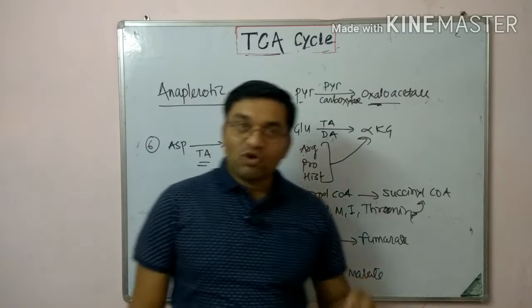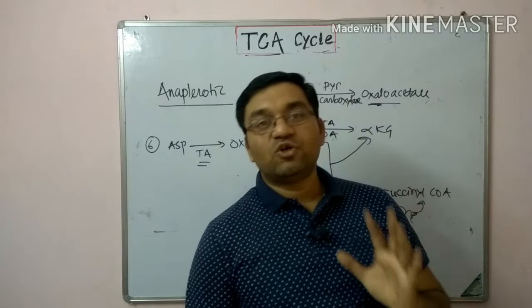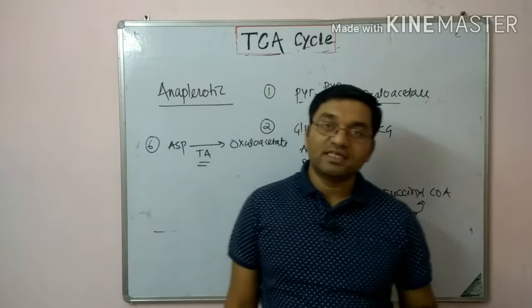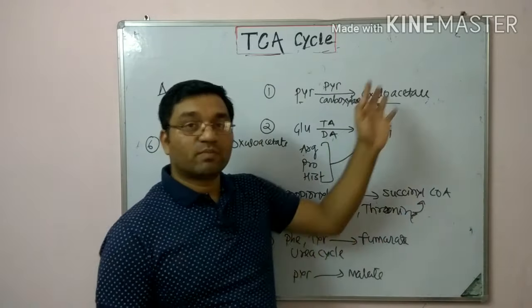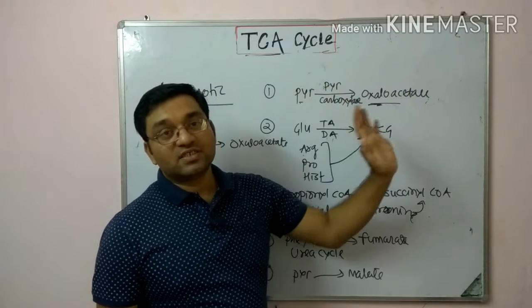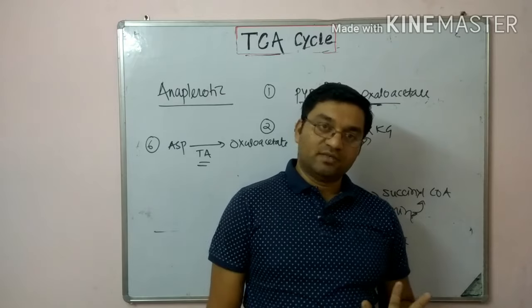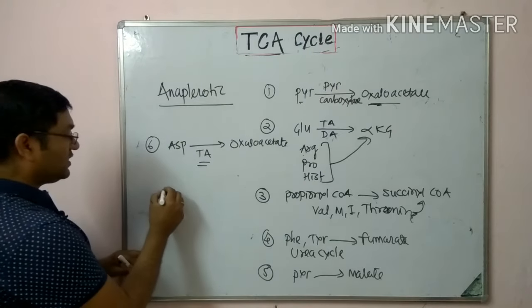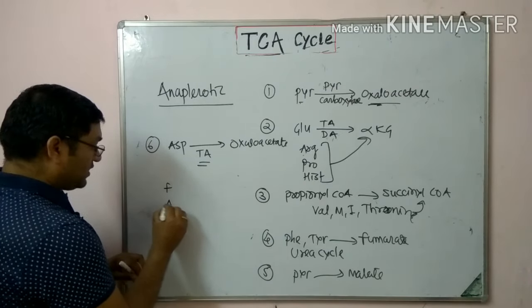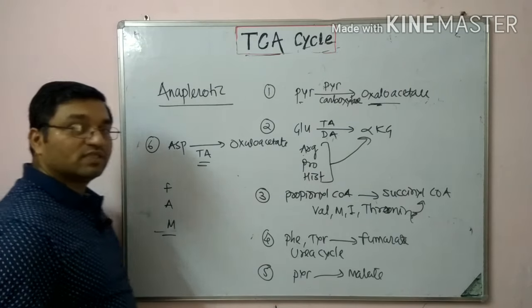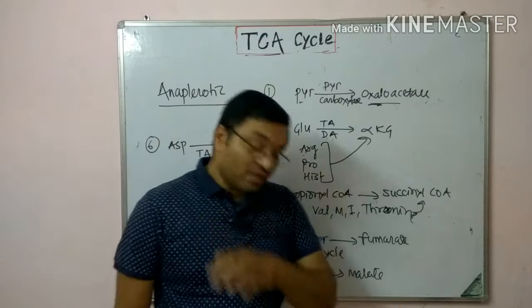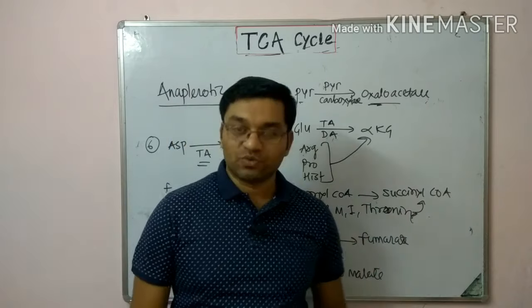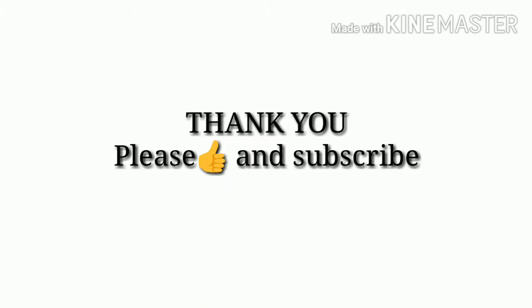Summarizing the TCA cycle: it is an important metabolic pathway and the common oxidative pathway for all foodstuffs. Oxaloacetate acts as a catalyst and is regenerated; it is required for burning of acetyl CoA — fat is burned on the wick of carbohydrate. The three inhibitors of TCA cycle are fluoroacetate, arsenite, and malonate. Thank you for watching — stay home, stay safe.